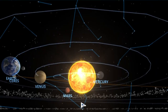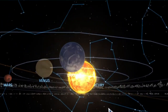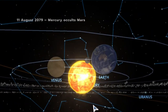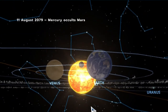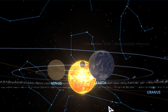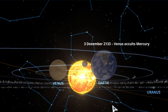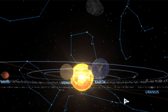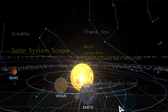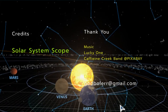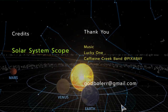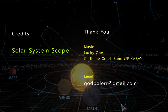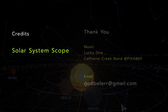Now that you know about transit and occultation, explore similar instances on future dates with the help of online simulation software like Solar System Scope or Stellarium. Thank you.